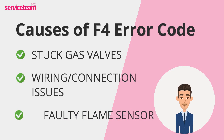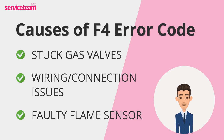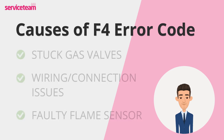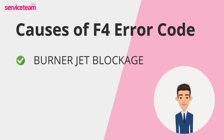Another reason for the F4 fault is a faulty flame sensor. The flame sensor, responsible for informing the PCB whether the flame is lit, can malfunction due to cracked porcelain insulation or a buildup of combustion by-products like carbon, which can trigger an F4 error. Small debris can also block the burner jets, which light the gas during the startup process — a blockage prevents the flame from igniting, causing the boiler to show an F4 fault.